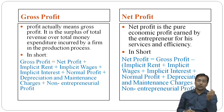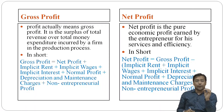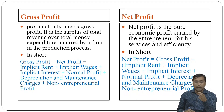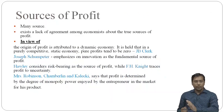Net profit is the pure amount — what you receive after making all payments for goods, services, and efficiency. The formula for net profit is: gross profit minus implicit rent, minus implicit wages, minus implicit interest, minus normal profit, minus depreciation, minus non-entrepreneurial profit. What remains is net profit.